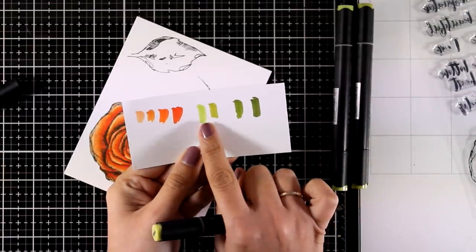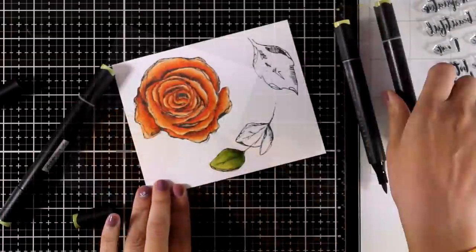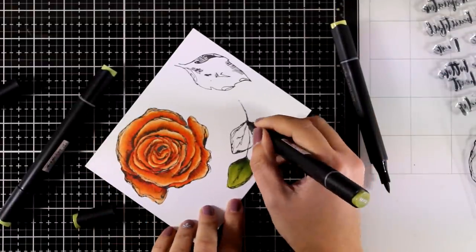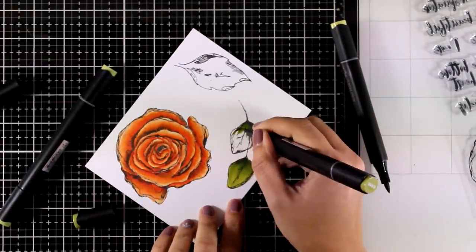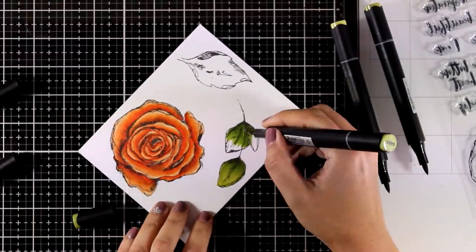And finally I am going to use the green colors from the same set. I will not use the lighter one, I will go with the next three ones. So again I am using the same technique adding the darker shade at the bottom, moving to the middle shade and then to the lighter one.